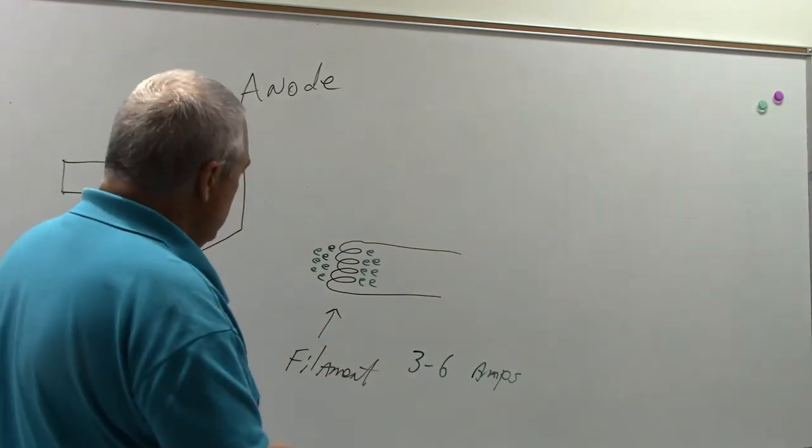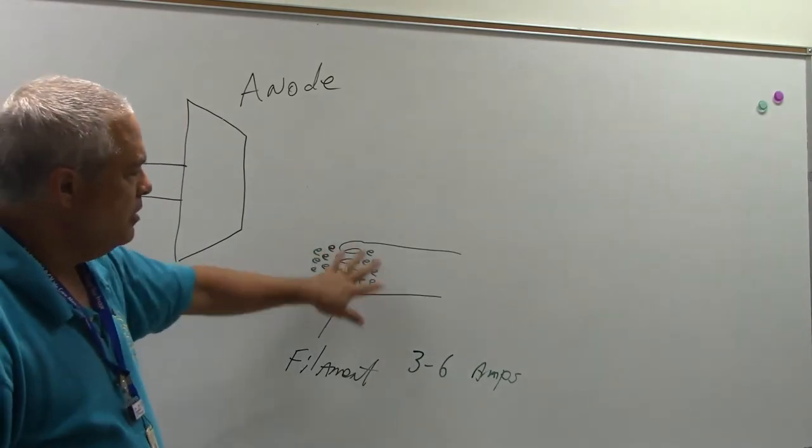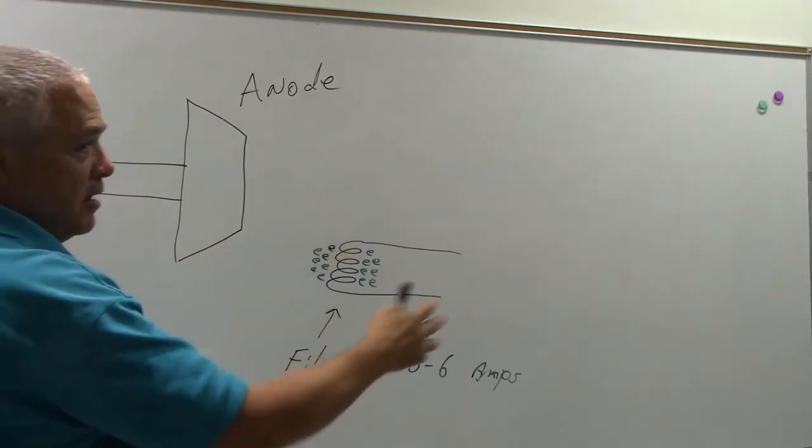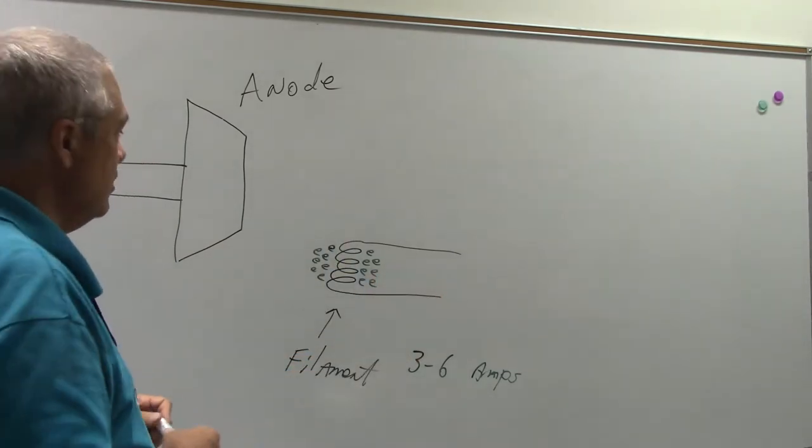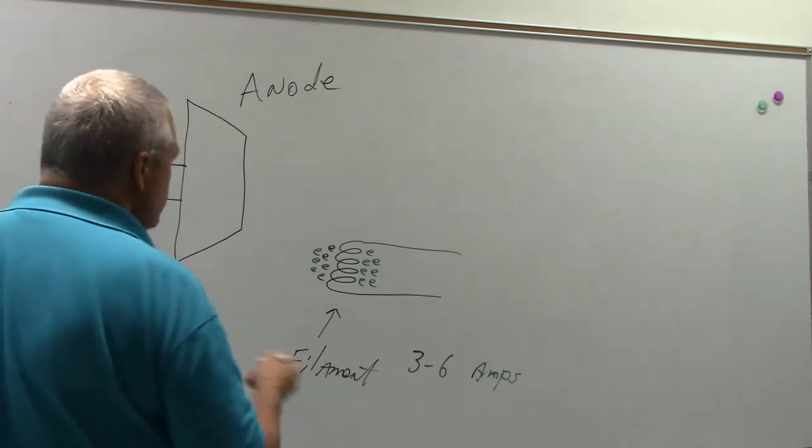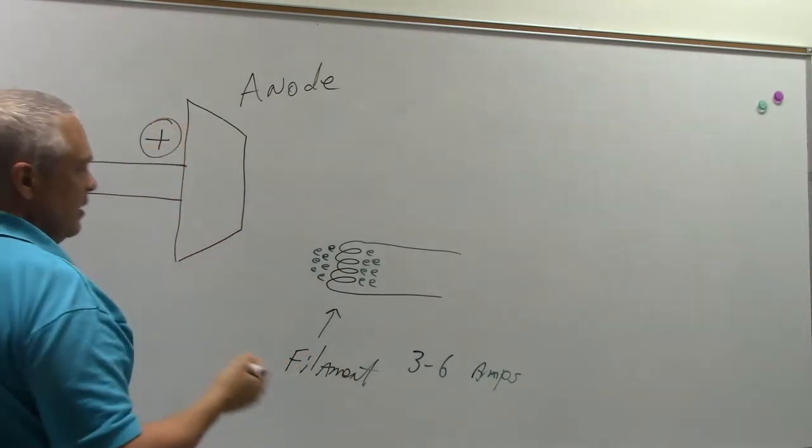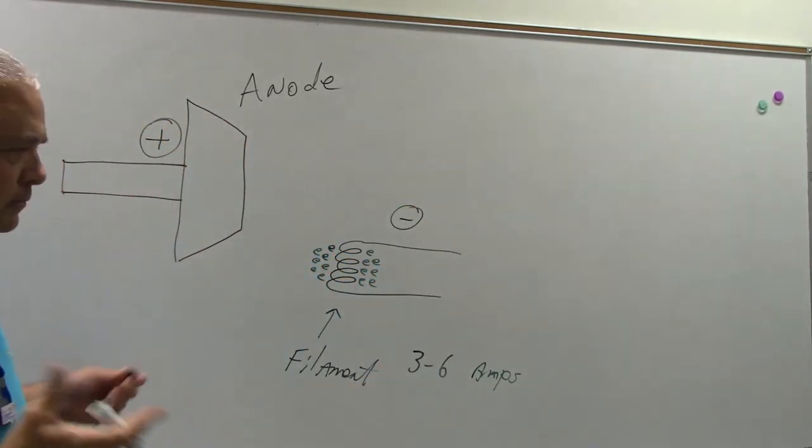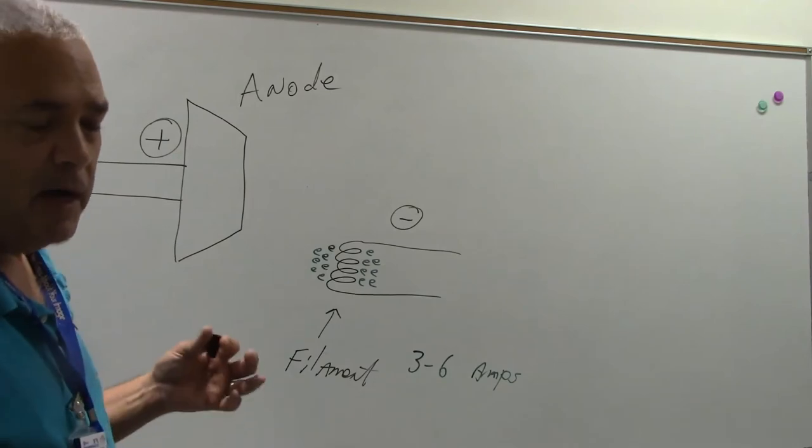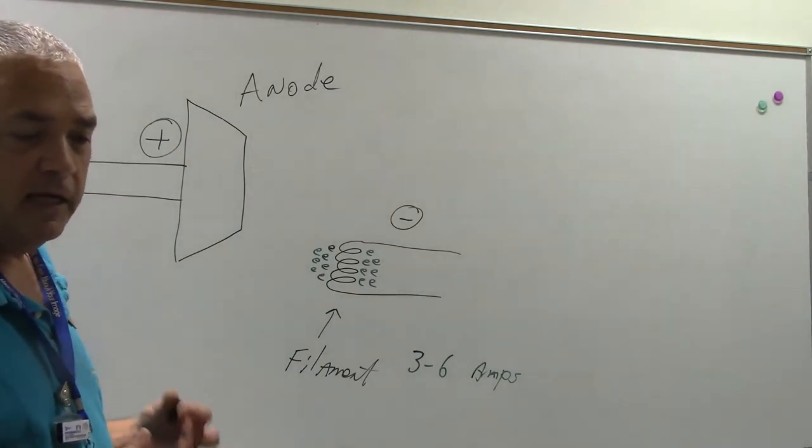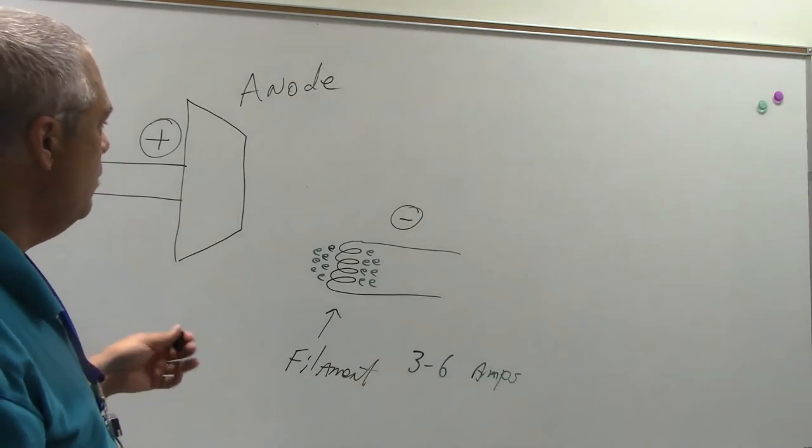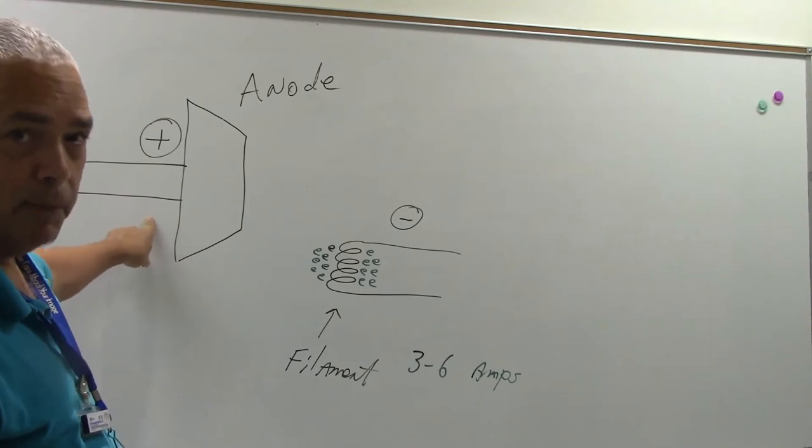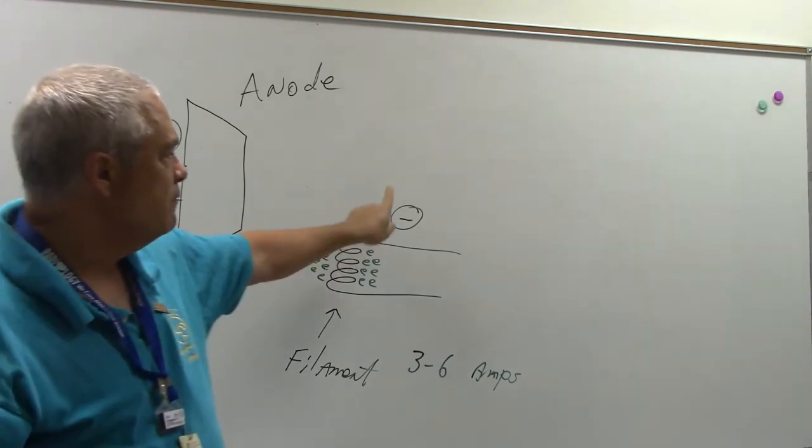So, what winds up happening, I've got a bunch of electrons here, and I've charged the entire circuit with DC current. So, I've got a positive charge on the anode, and I've got a strong negative charge on the cathode. And typically, if I've got my kilovoltage set for 80 kVp, then what's going to wind up happening is I'm going to have about 40,000 volts positive and another 40,000 volts negative.